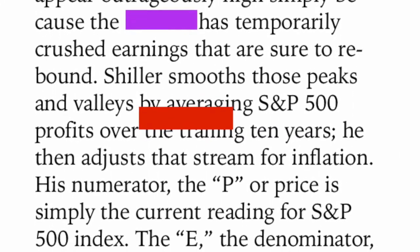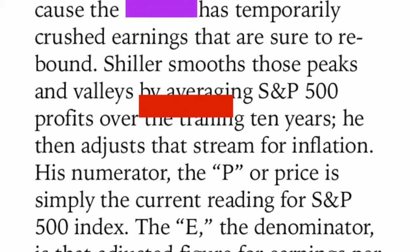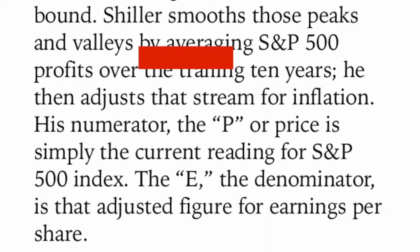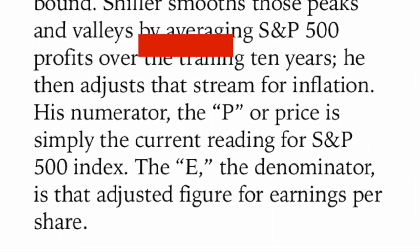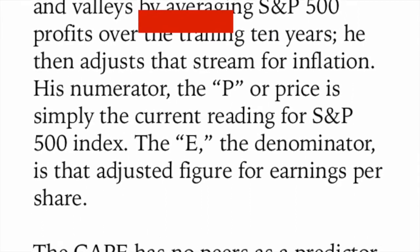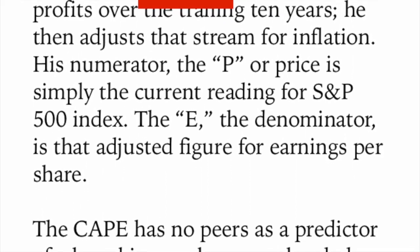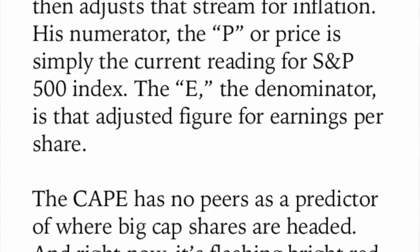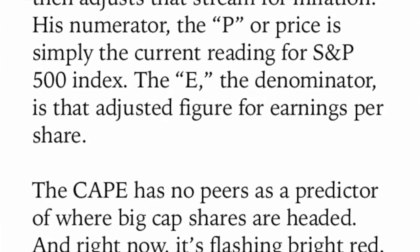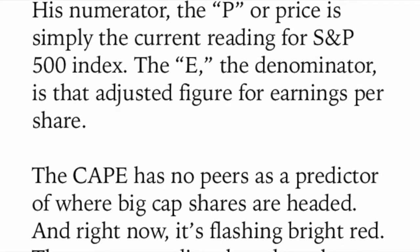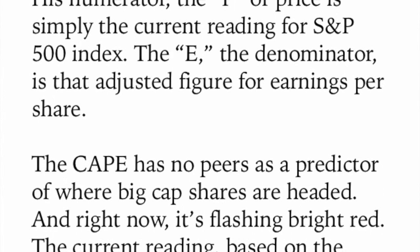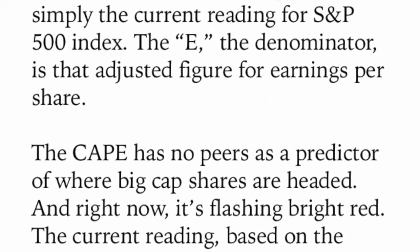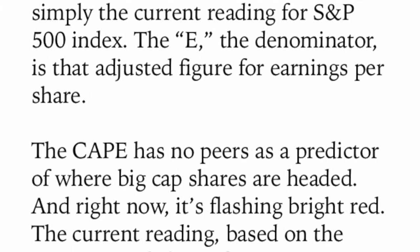Shiller smooths those peaks and valleys by averaging S&P 500 profits over the trailing 10 years, then adjusts that stream for inflation. His numerator — the P, or price — is simply the current reading for the S&P 500 index. The E in the denominator is that adjusted figure for earnings per share. The CAPE has no peers as a predictor of where big-cap shares are headed, and right now it's flashing bright red.